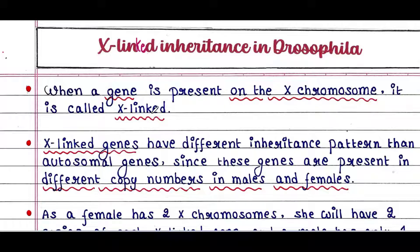When a gene is present on the X chromosome it is called an X-linked gene. X-linked genes have a different inheritance pattern than autosomal genes, since these genes are present in different copy numbers in males and females.